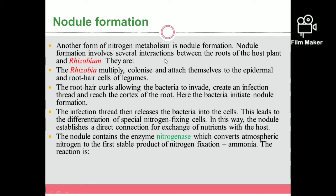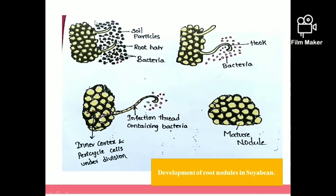In nodule formation, there are several interactions between the host plant and the bacteria Rhizobium. The legume roots are attracted by Rhizobium bacteria. The roots secrete sugars and nutritious compounds, and the bacteria are attracted to the surroundings of the roots. The bacteria then multiply in colonies and release proteins, eventually entering the root tissue.